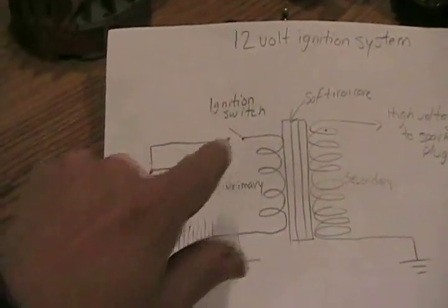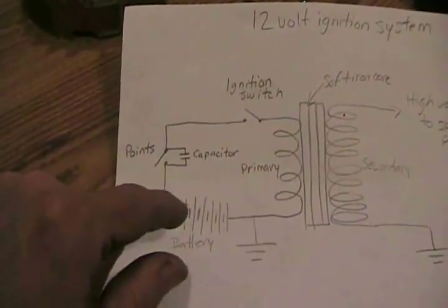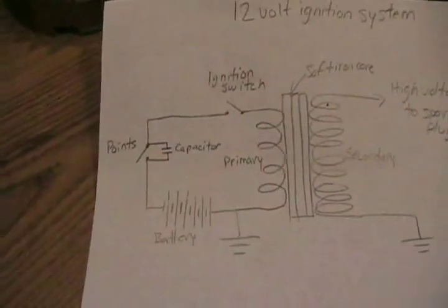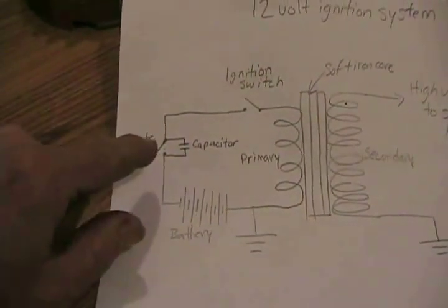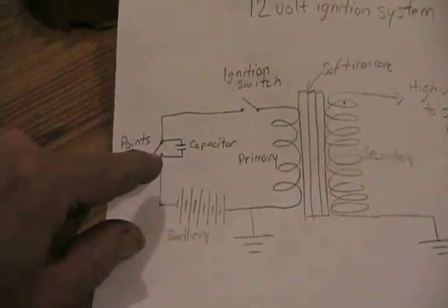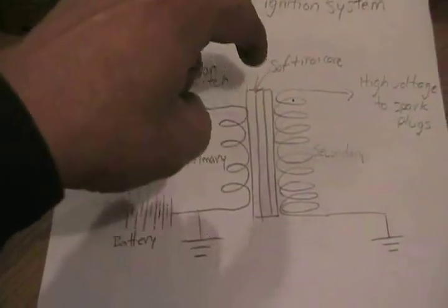So when the ignition switch is closed and the points are open, there's virtually no power energizing the primary side. So, of course, there's no lines of flux. Well, for a while, during the engine's rotation, the points will be closed. Of course, if the switch is on, then everything is energized. The big lines of flux start to form around here.